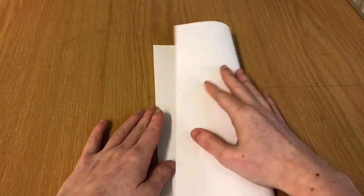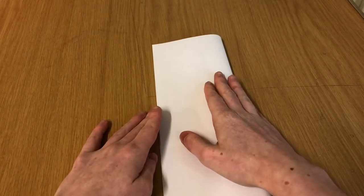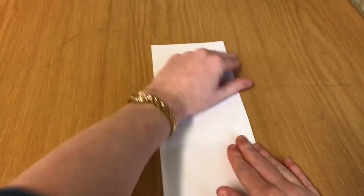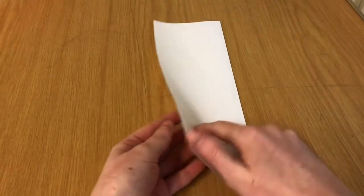To start making our paper airplanes, you need the whole sheet of A4. We're going to fold it in half really firmly, press down your edges, then you want to unfold it.